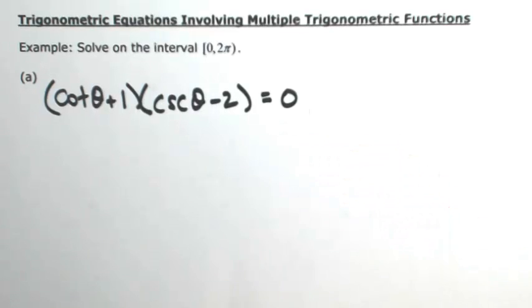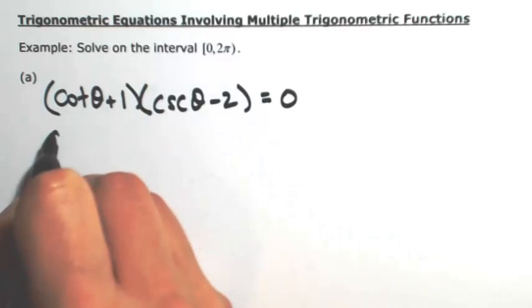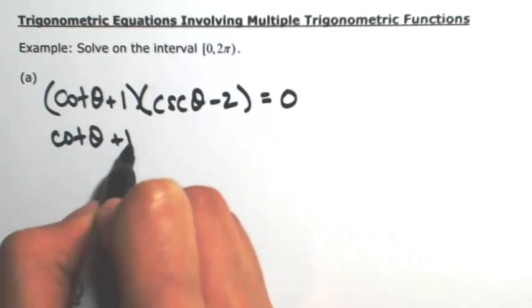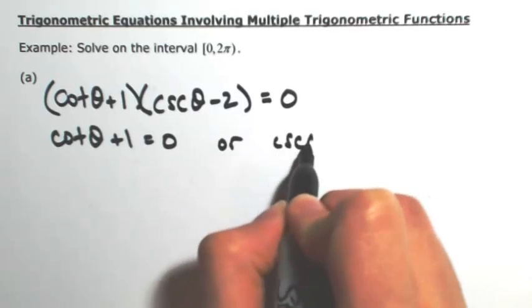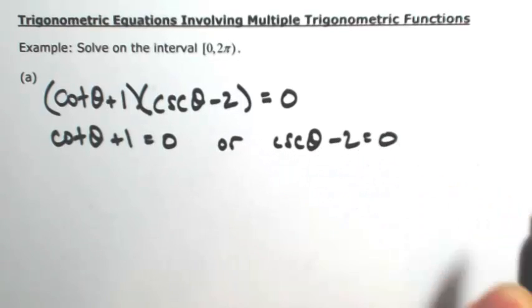So since their product already equals 0, we can set each factor to 0. So the cotangent of theta plus 1 is 0, or the cosecant of theta minus 2 is 0.